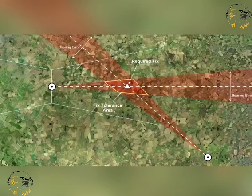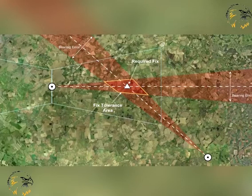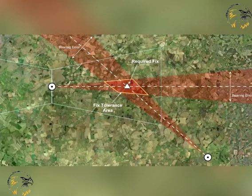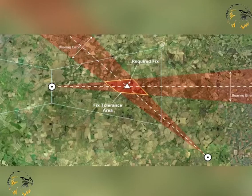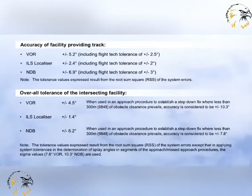Because standard navigational systems have accuracy limitations, the geographic point which is identified is not precise, but may be anywhere within an area called the fixed tolerance area, which surrounds the plotted point of intersection. The dimensions of this intersection fix area are determined by the accuracy of the systems that provide the information to define the fix. These are defined by: ground station tolerance, airborne receiving system tolerance, flight technical tolerance — how accurately you can fly — and distance from the facility. There is a difference between the tolerances of the approach procedure intersecting facility and the along-track facility, accounted for by the fact that flight technical tolerances are not applied to the former. The values illustrated here are used in the development of instrument procedures.